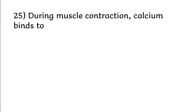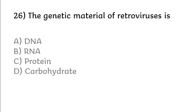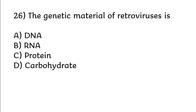During muscle contraction, calcium binds to: actin, myosin, troponin, tropomyosin. Correct answer is option C: troponin. The genetic material of retroviruses is: DNA, RNA, protein, carbohydrate. Correct answer is option B: RNA.